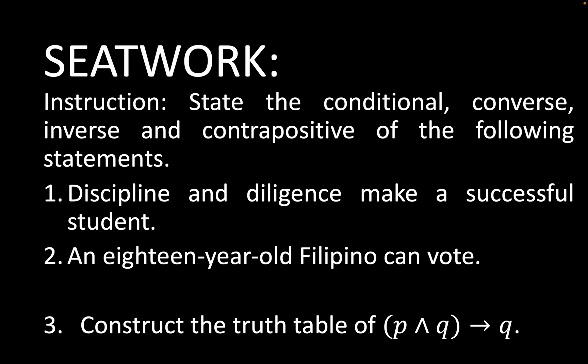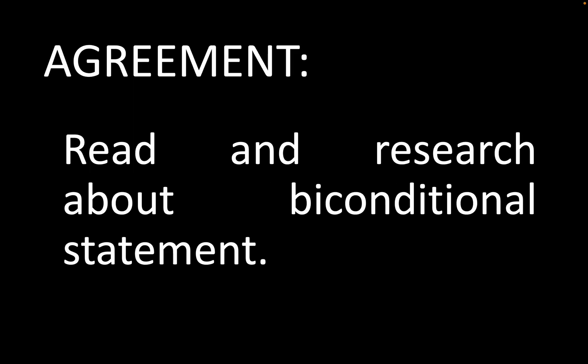Now try to answer this activity: state the conditional, converse, inverse, and contrapositive of the following statements — 'Discipline and diligence make a successful student' and 'An 18-year-old Filipino can vote.' Also construct a truth table for p and q implies q. Try to answer in your notebook and we will check it in the next meeting. Also read and research about biconditional statements. Thank you so much for watching. I hope you've learned something. Please like, subscribe, and share with your friends. Goodbye!